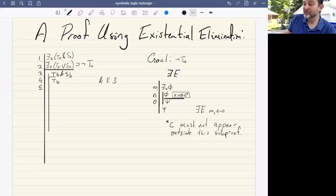At step five, we're going to assert that it follows that if B is T, then either B is T or B is S via disjunction introduction from four.